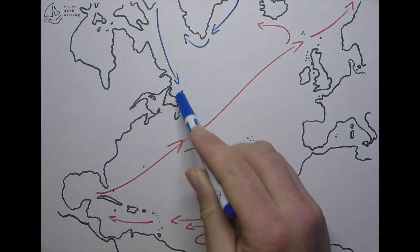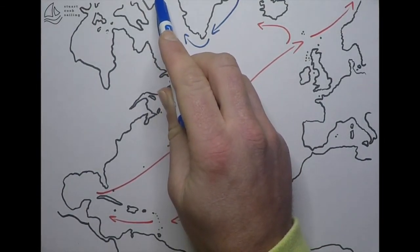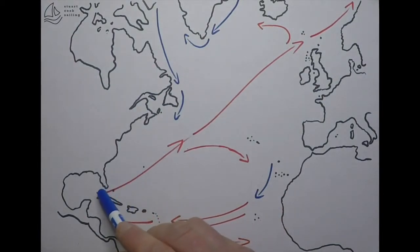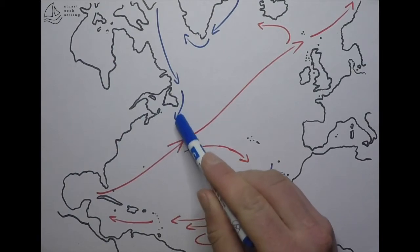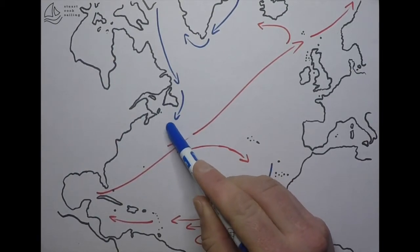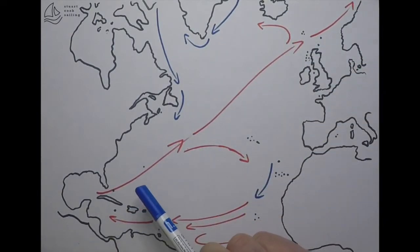These cold waters getting pushed down from the polar region of the Arctic and these super warm waters getting pushed up by the strong Gulf Stream create a real battleground here. That helps the formation of the polar lows, which then get pushed up into the northeast Atlantic.